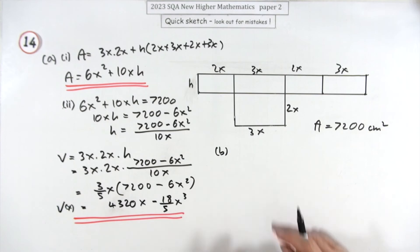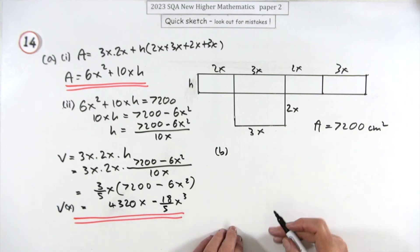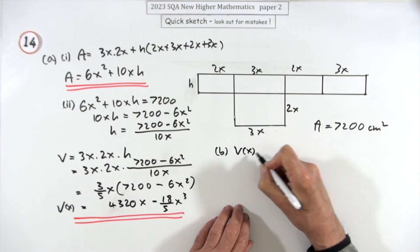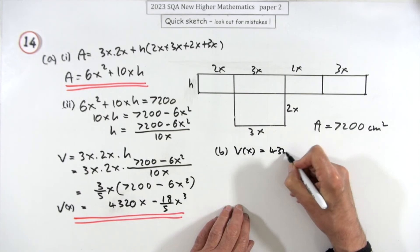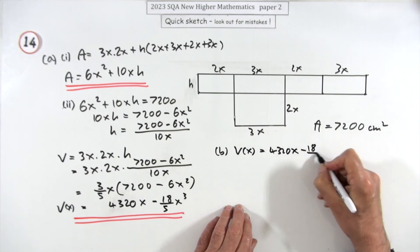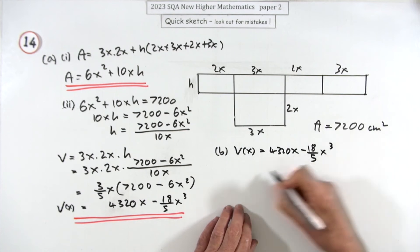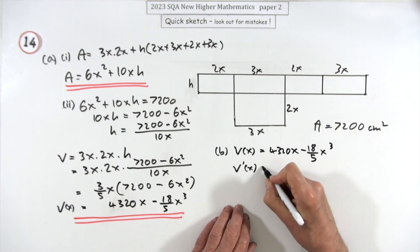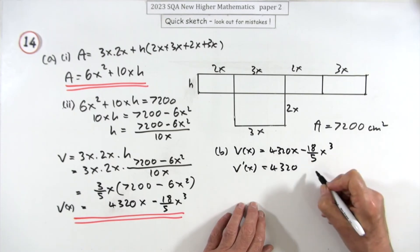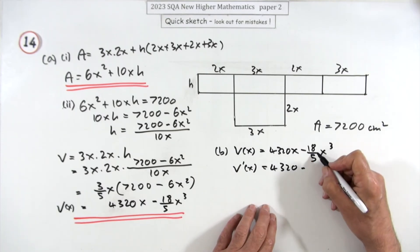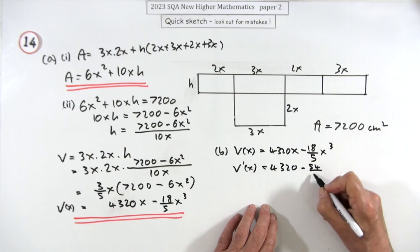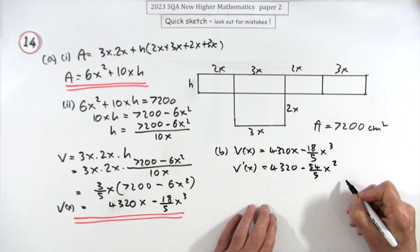Part B is just a standard optimization. V(x) = 432x − (18/5)x³, so differentiating: V'(x) = 432 − (54/5)x². That's multiply the coefficient by 3 and reduce the power.